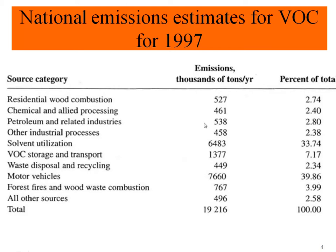For example, in wood combustion there are some highly volatile materials in wood, so when they combust some of them are released to the atmosphere. In chemicals and petroleum-related industries, crude oil and petroleum-related products have some portions that are significantly lighter than other products.